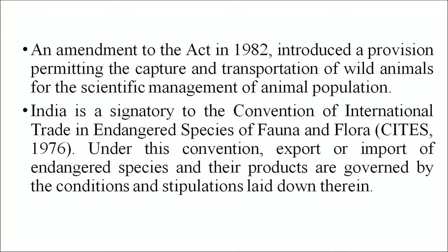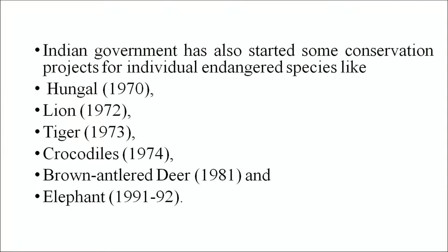An amendment in 1982 introduced a provision permitting the capture and transportation of wild animals for scientific management of animal populations. India is a signatory to the Convention on International Trade in Endangered Species of Fauna and Flora. The Indian government has also started conservation projects for individual endangered species: hangal in 1970, lion in 1972, tiger in 1973, crocodile conservation in 1974, brown antler deer in 1981, and elephants in 1991-92.